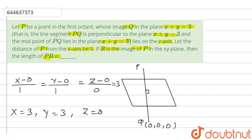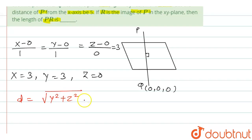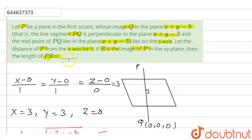The distance from the x-axis equals 5. The distance from the x-axis uses only the y and z coordinates, so distance equals the square root of y squared plus z squared. We have y equals 3 and z equals 0, giving the square root of 9 plus 0. But since the midpoint lies on the z-axis, the x and y coordinates of the midpoint are zero.